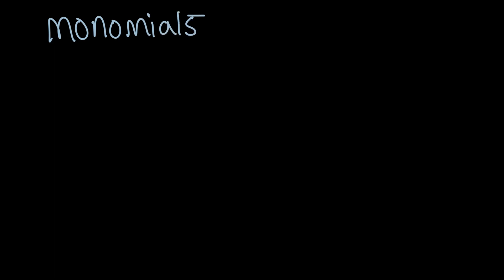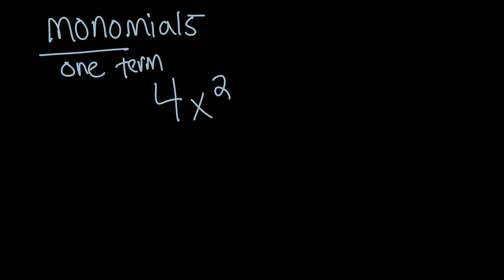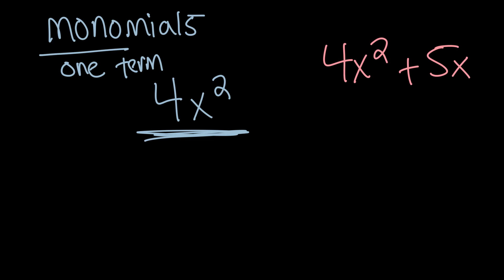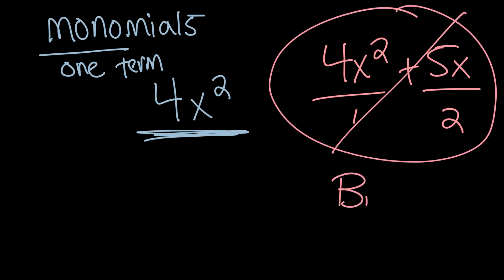In this video we're going to be multiplying monomials together. An example of a monomial is 4x squared — that's a monomial. 'Mono' means one, which refers to the number of terms, so 4x squared is all one term. What won't we be working with? Something like 4x squared plus 5x — that has two terms: 4x squared is the first, 5x is the second. So that is not a monomial.